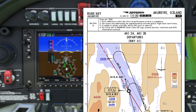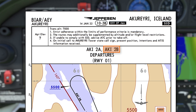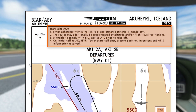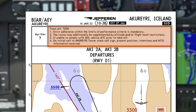Jumping into the cockpit now, and we'll look at the Alpha Kilo India 2 Bravo departure from Akkuari Airport's runway 01. It's plate 10-3B, effective from the 27th of January. The airport elevation is 7 feet, and the transition altitude is 7,000 feet. There are a few notes to be aware of: strict adherence within the limits of performance criteria is mandatory. The routes may additionally be supplemented by altitude and/or flight level restrictions. If unable to comply with the SID, advise ATC prior to takeoff, and on initial call to Akkuari Tower, state callsign, present position, intentions, and ATIS information received.